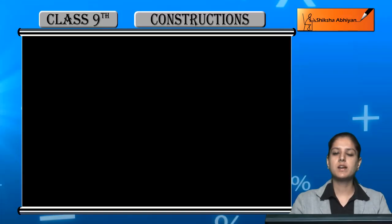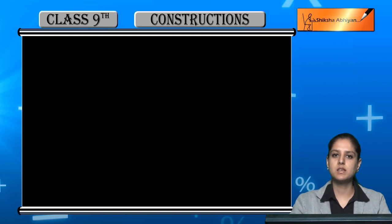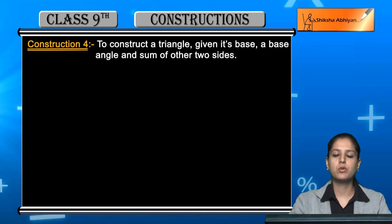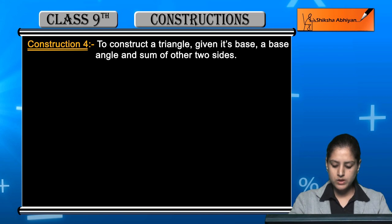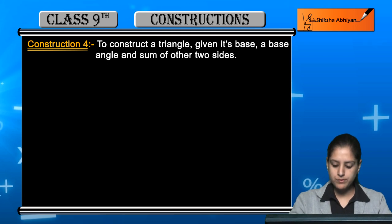Now we are starting with the second type of construction. We will construct some triangles in which we have given some conditions. Construction number 4, Triangle Type 1: to construct a triangle given its base, a base angle, and the sum of the other two sides.